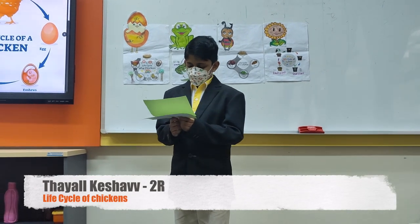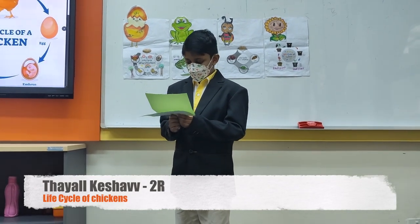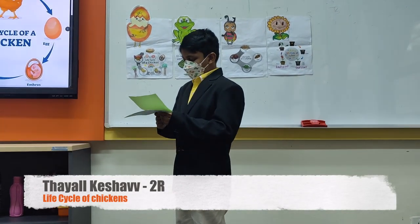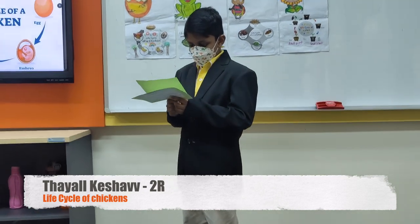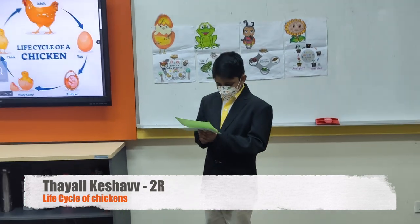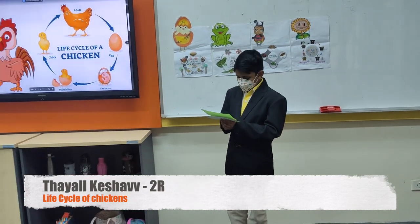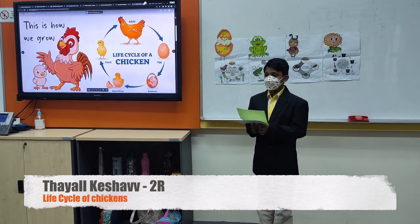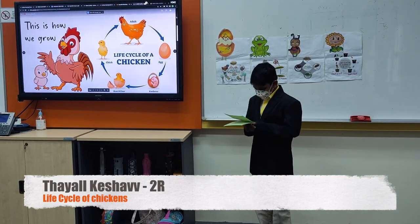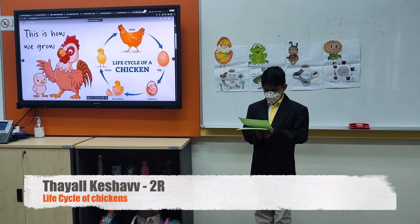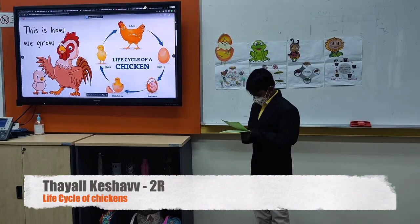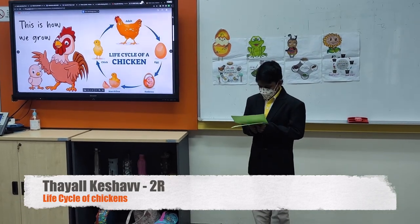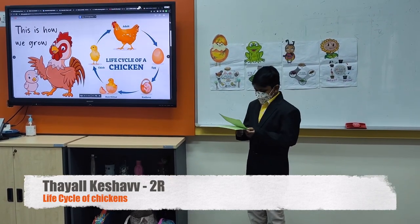On average, a chicken's lifespan may last between three to five years. Every chicken goes through three distinct phases. Below are the four phases which are in the chicken life cycle.